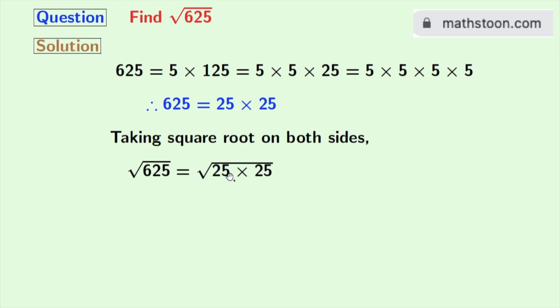Now this is equal to 25, as we all know that root over a times a is equal to a. Here a is 25. So finally, we get square root of 625 is equal to 25, and this is our answer.